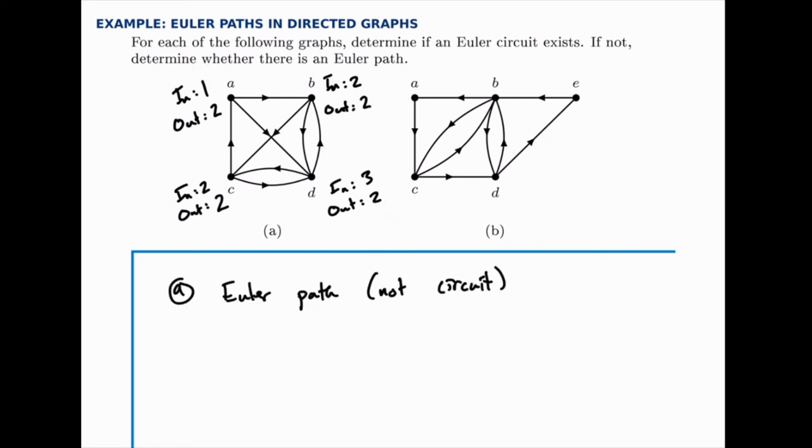Then for part B, we'll do the same thing. Node A has one in and one out. Node B has three in and three out. Node C has two in and two out. Node D has two in and two out. And node E has one in and one out.